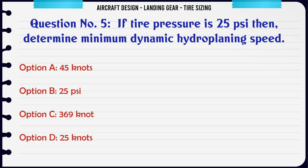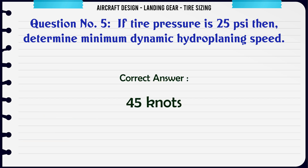If tire pressure is 25 psi, then determine the minimum dynamic hydroplaning speed. A) 45 knots, B) 25 psi, C) 369 knots, D) 25 knots. The correct answer is 45 knots.